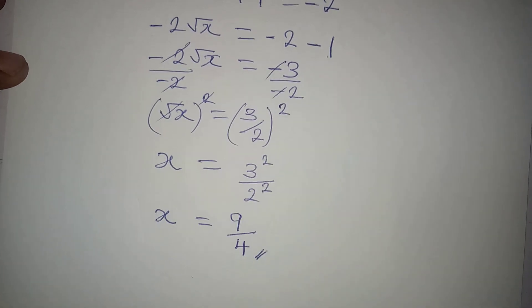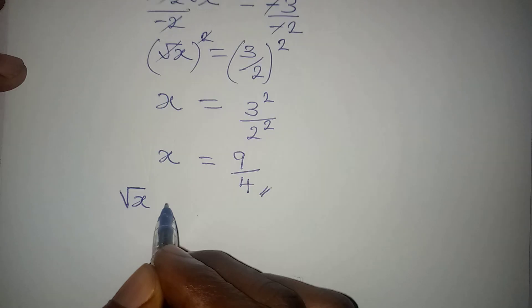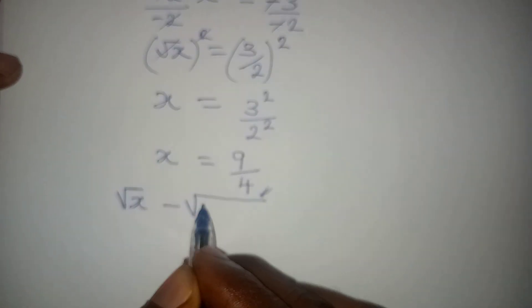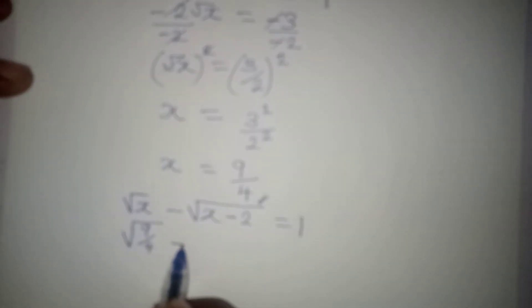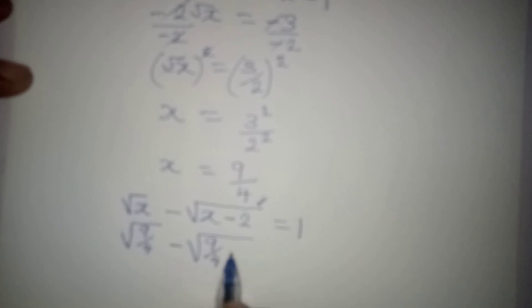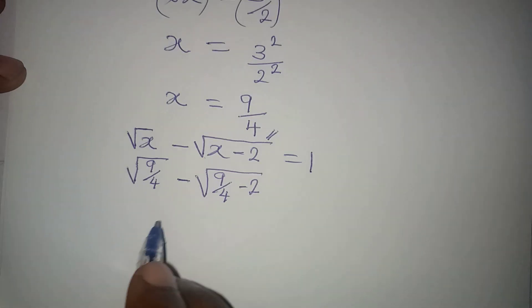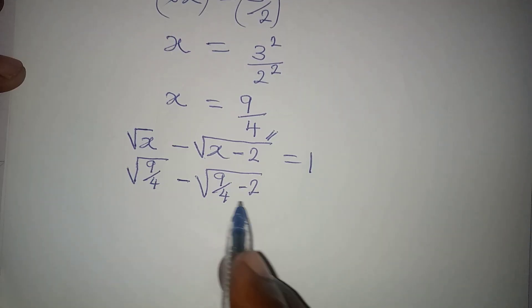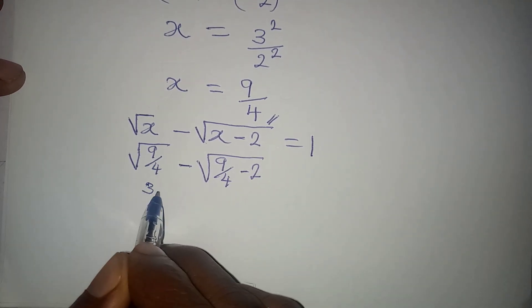But are we really correct? Let's verify using the original equation: square root of x minus square root of x minus 2, equal to 1. Substituting x equals 9 over 4, we have square root of 9 over 4, minus square root of 9 over 4 minus 2. Square root of 9 over 4 is 3 over 2.